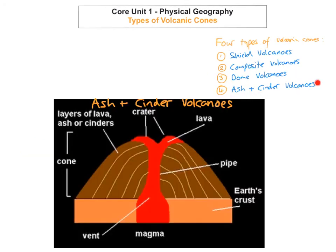The fourth type of volcanic cone you need to know is ash and cinder volcanoes. If you have an ash and cinder volcano, the eruptions are very violent and very explosive. The slopes of the volcano are very, very steep. It's composed of different layers of ash, cinder, and volcanic bombs. An example of this would be Paricutin in Mexico.